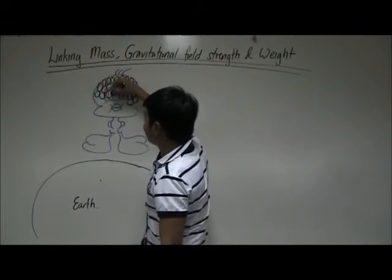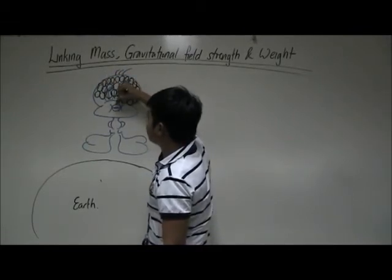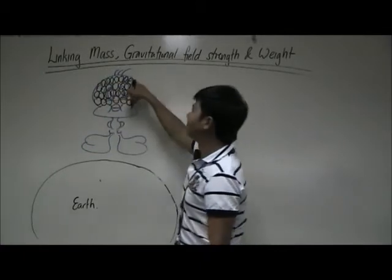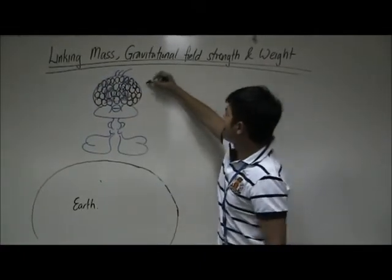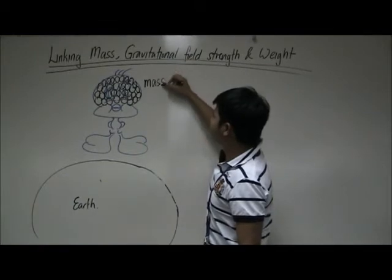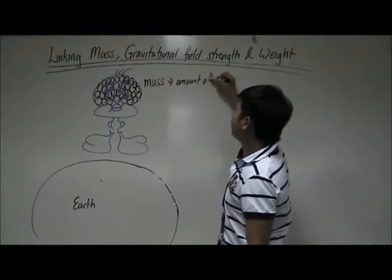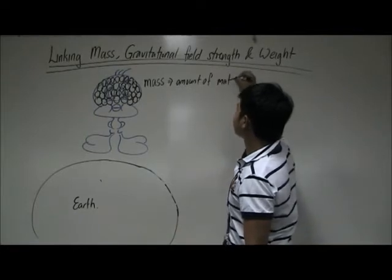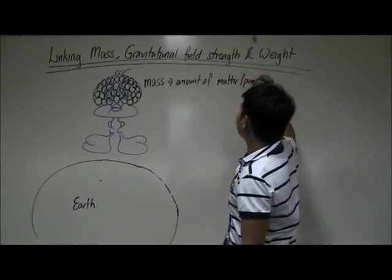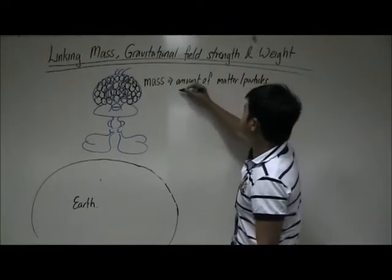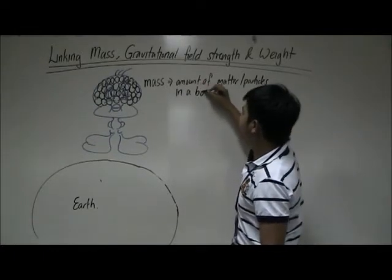What is mass exactly? Mass is actually the amount of matter or particles in the body. In this case, we say that the mass of the body is actually the amount of matter or particles in a body.